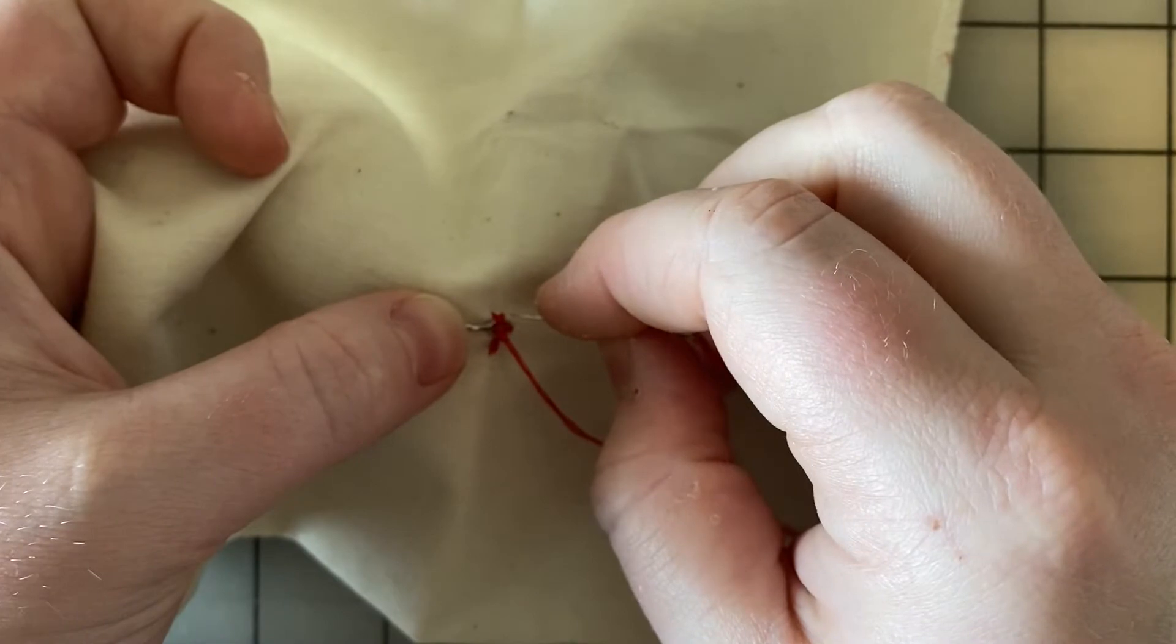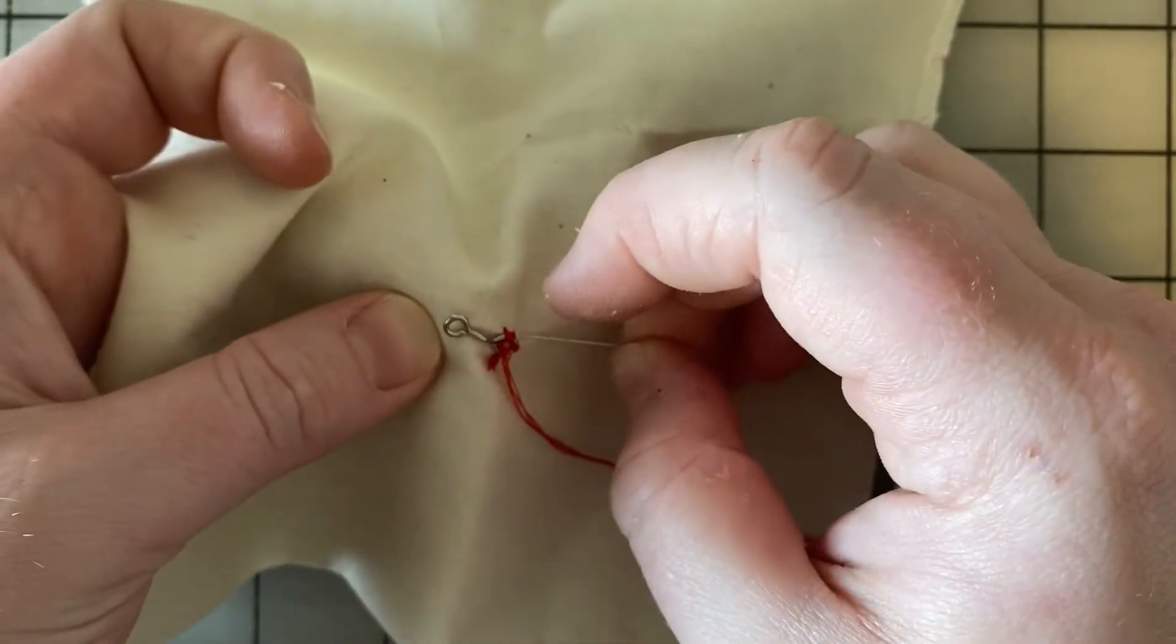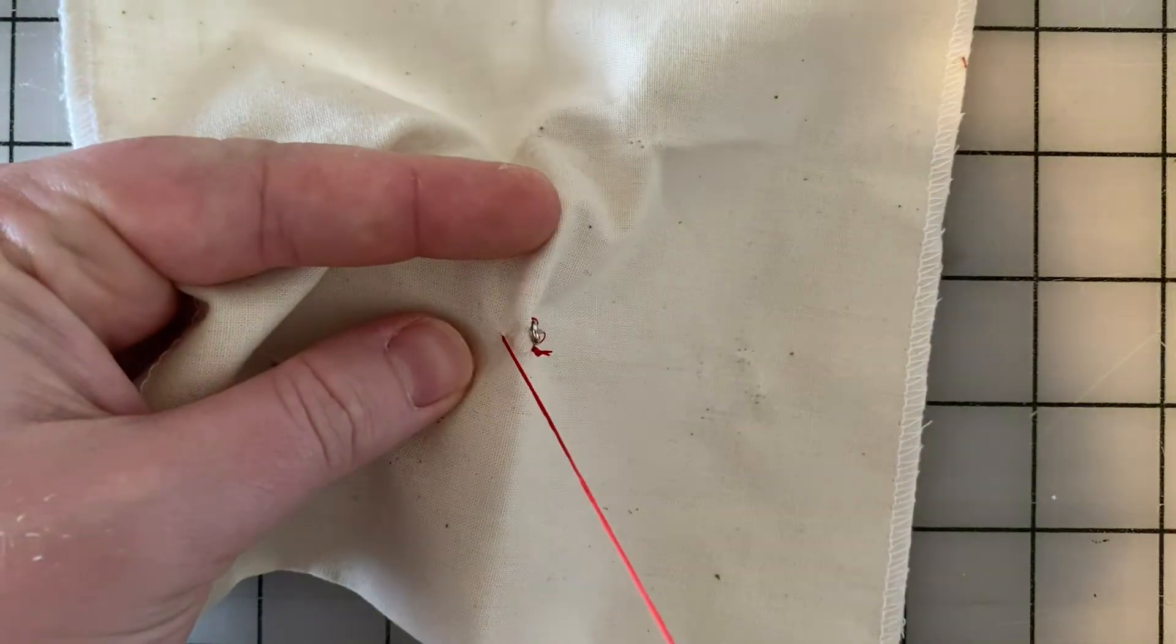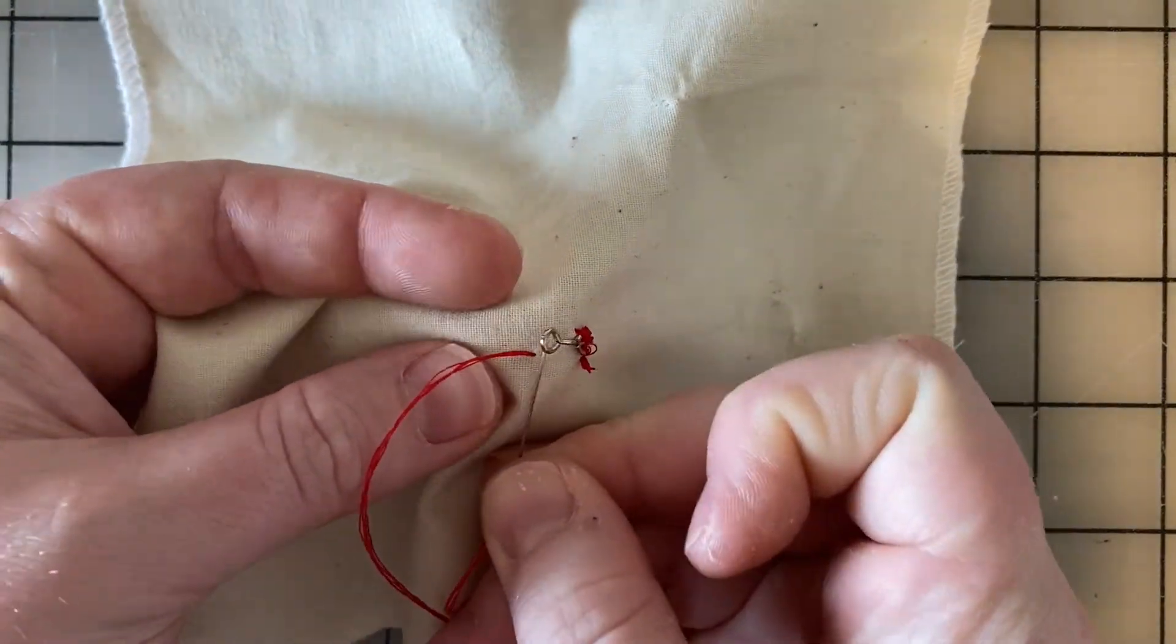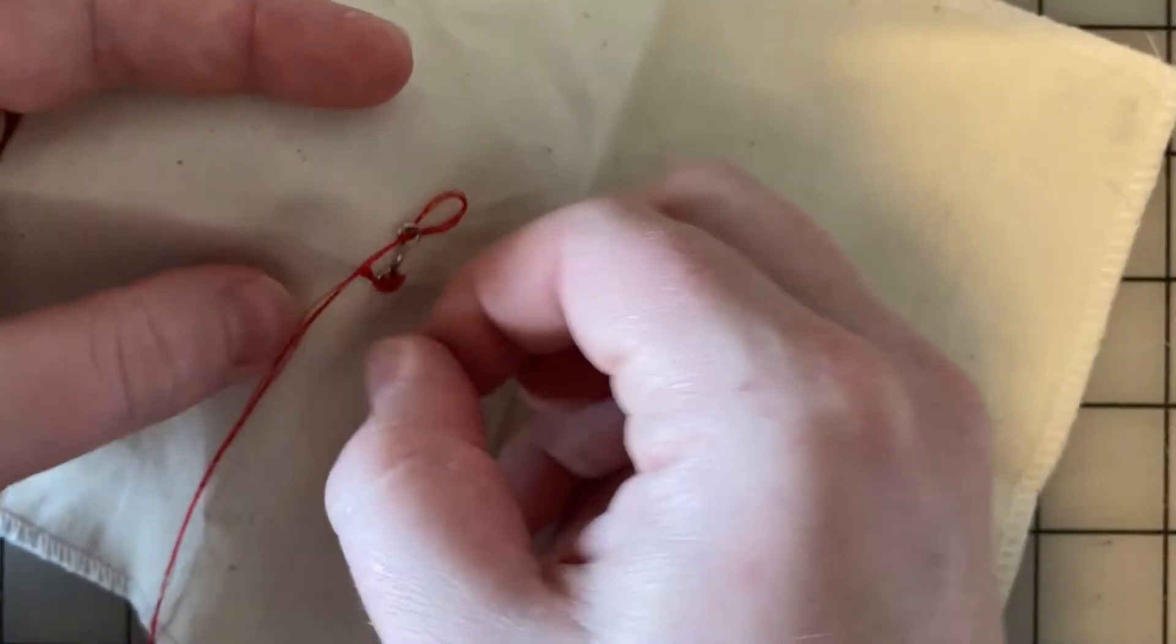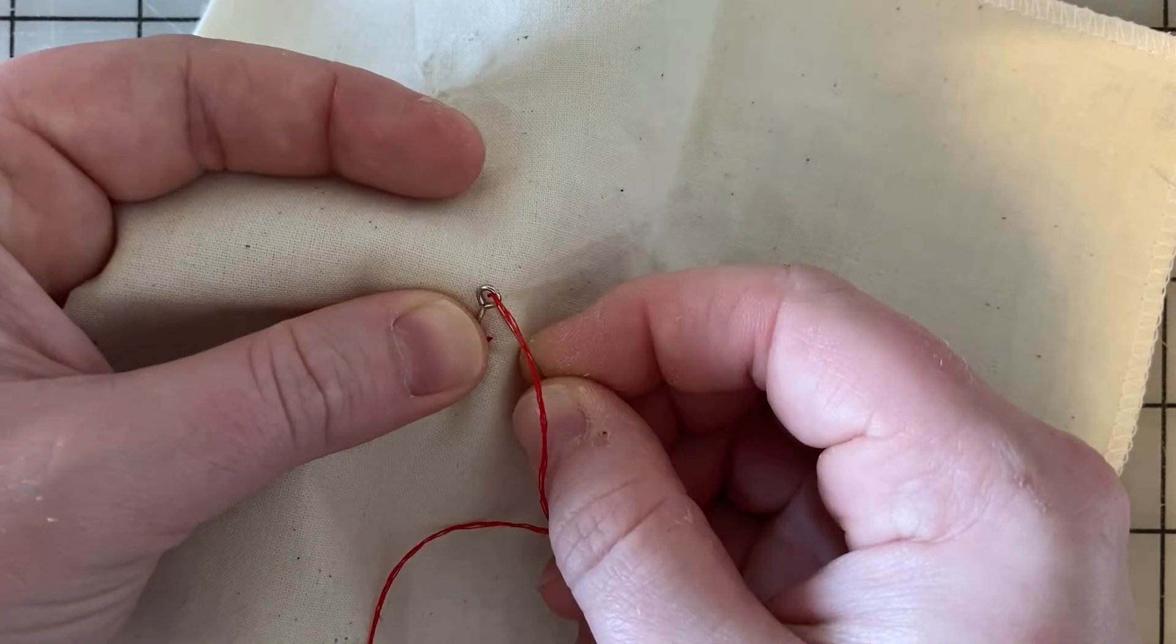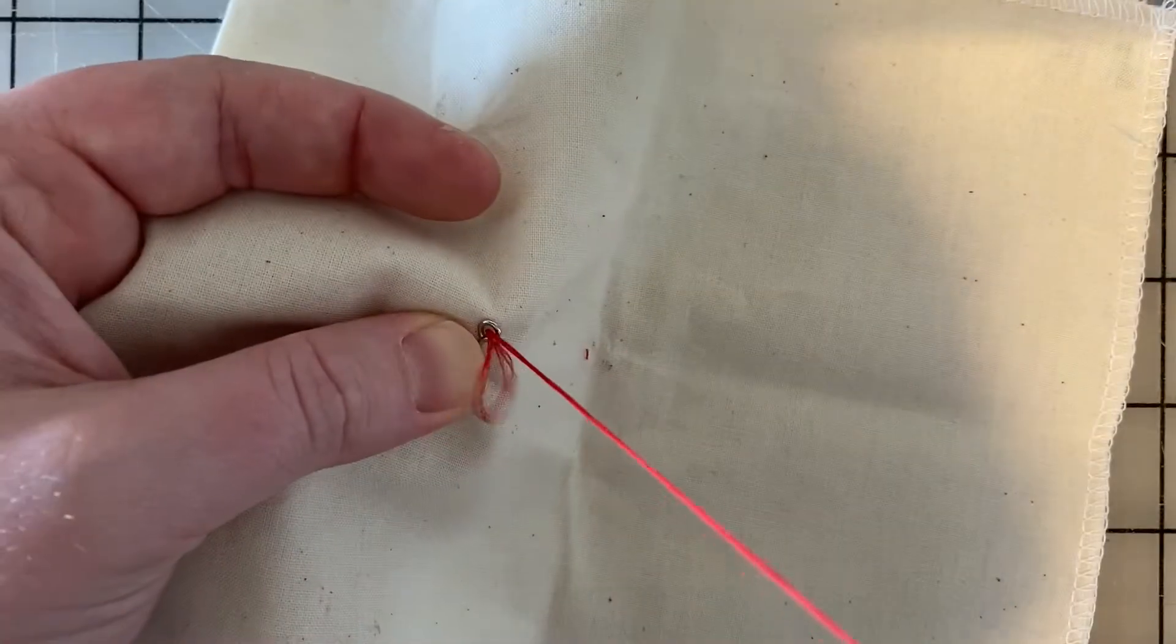When you've finished around that eye, you'll sink your needle and we'll come up through the second eye. So we traveled underneath the fabric and we've come up through the other eye of the bar. And again we'll just do this starburst around the eye of the bar.